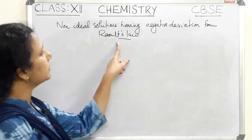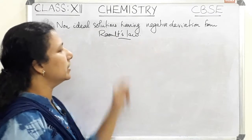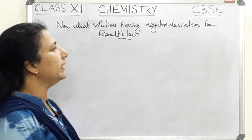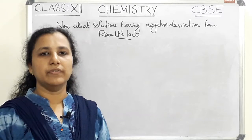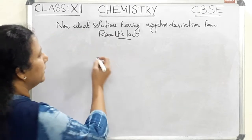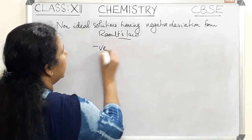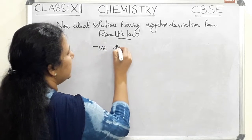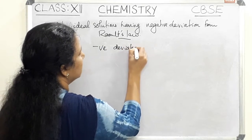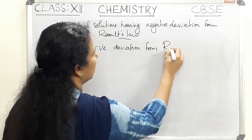We have already seen non-ideal solutions having positive deviation from Raoult's law. Now let us see non-ideal solutions having negative deviation from Raoult's law.